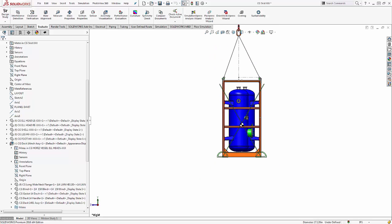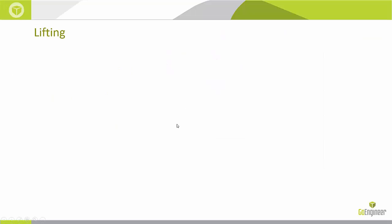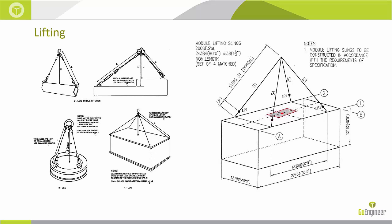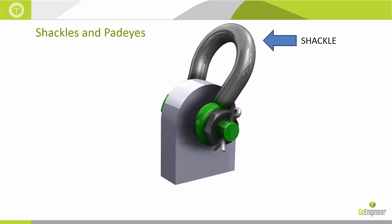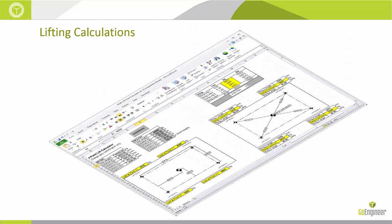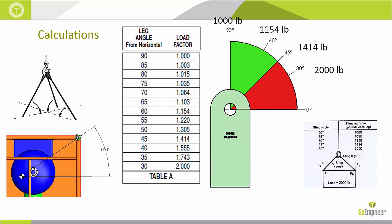Now we also want to look at getting the pad eyes positioned correctly. We need the slings in the proper location over the CG. There are length requirements on those slings, and for the pad eyes with shackles, we want to make sure they're not getting twisted due to loading or misaligned angles. We also put together a spreadsheet to help with lifting calculations, and we're going to feed information from SolidWorks into that spreadsheet.